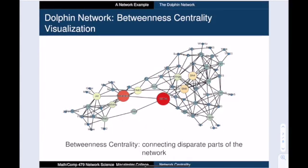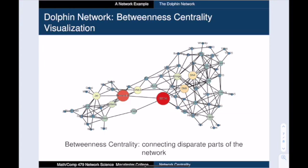Finally, we're going to size and color the vertices using betweenness centrality. And this visualization tells a profoundly different story. There's only two dolphins that really stand out here, SN100 and bee scratch. So apparently, these are the dolphins who are holding this social network together.